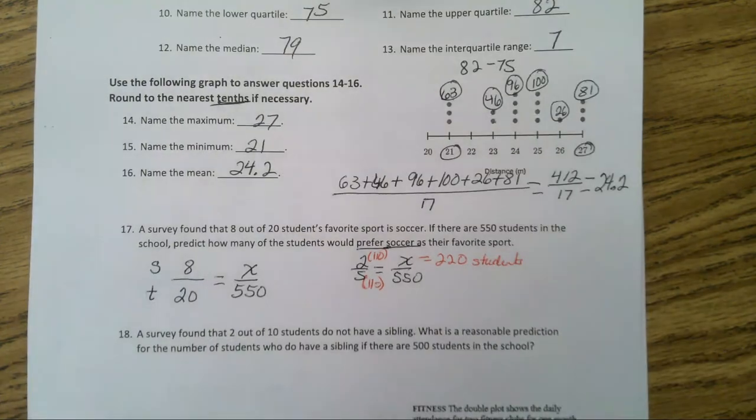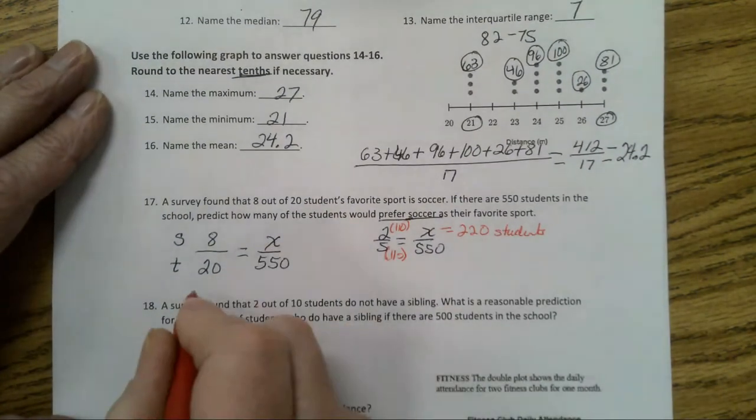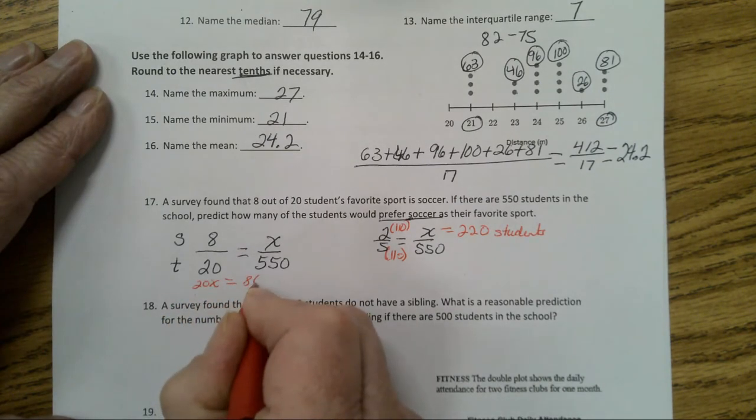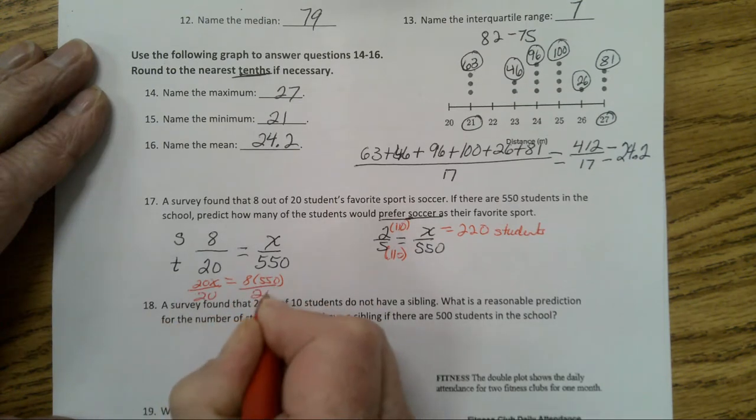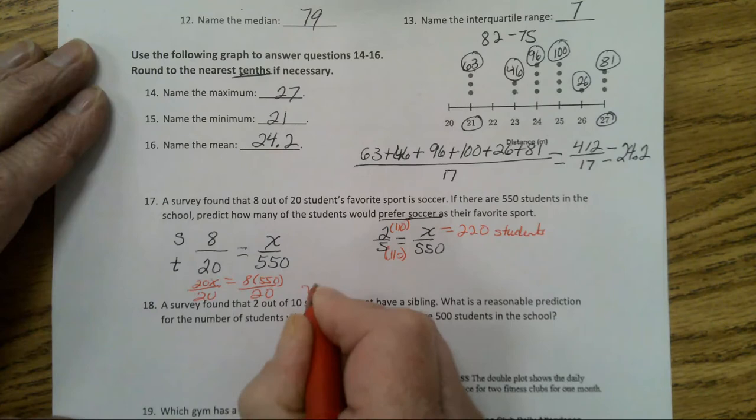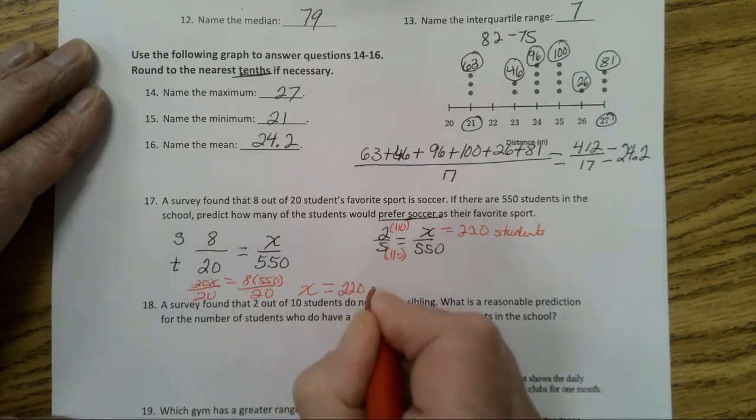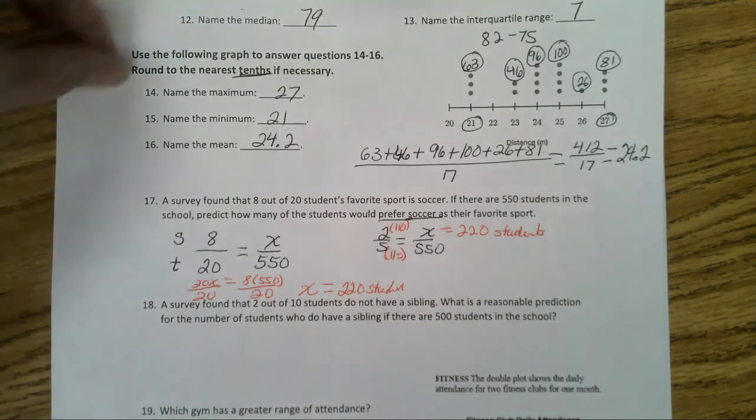Now you can still get the same answer, just cross products. 20 times x equals 8 times 550, then divide them both by 20, and here you also will end up with x equals 220 students. Both ways will work.